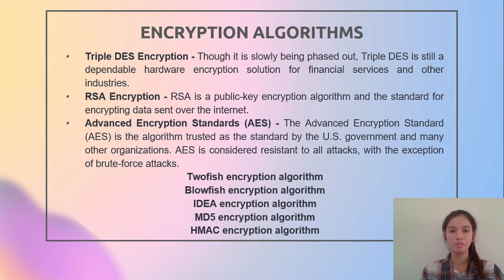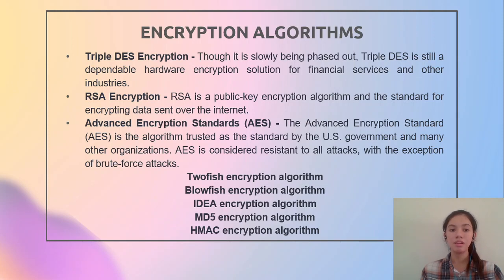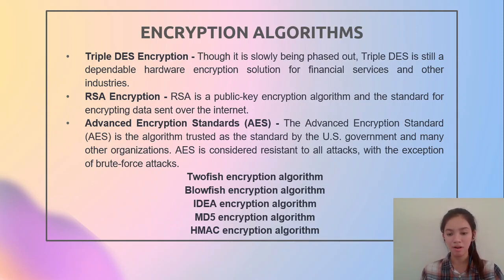Next let's see the different types of encryption algorithms available. The first is Triple DES encryption — though slowly being phased out, it is still a dependable hardware encryption solution for financial services and other industries. The next is RSA encryption, a public key encryption algorithm and the standard for sending encrypted data over the internet. Then there is Advanced Encryption Standard or AES, trusted as the standard by the US government and many organizations. AES is considered resistant to all attacks except brute force. Other popular algorithms include Twofish, Blowfish, IDEA, MD5, and HMAC encryption algorithms.